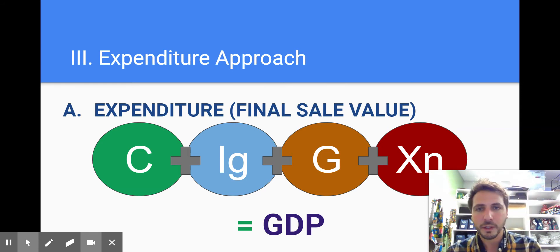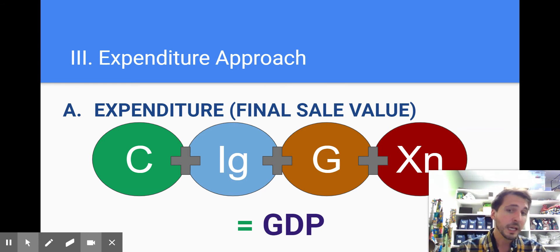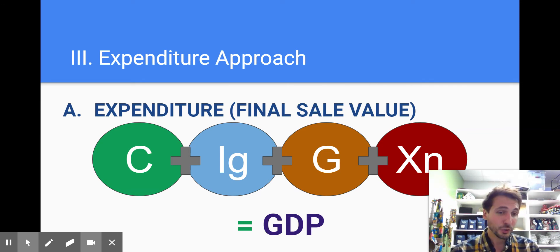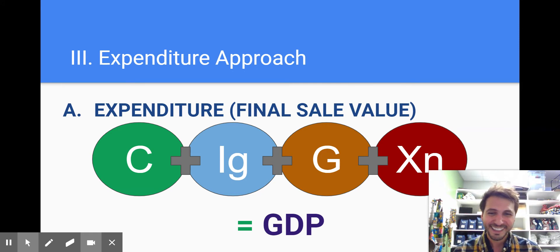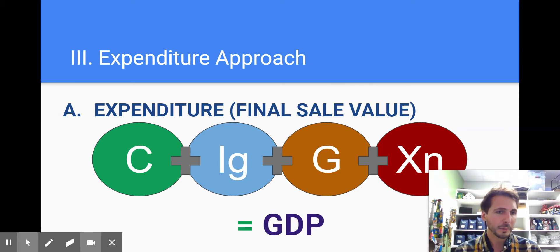What are expenditures? Well, the equation is actually quite simple: C plus IG plus G plus XN equals GDP. I call it SigJixon — it's dumb, but you'll remember it. Consumption plus investment plus government spending plus net exports equals GDP.